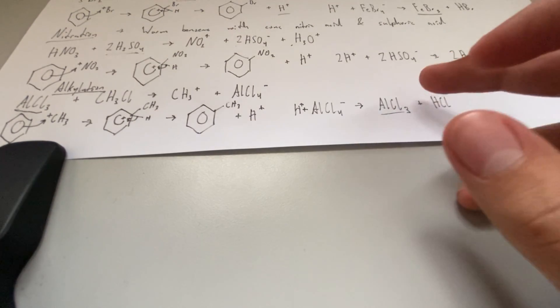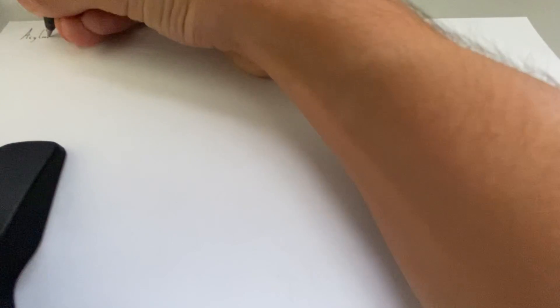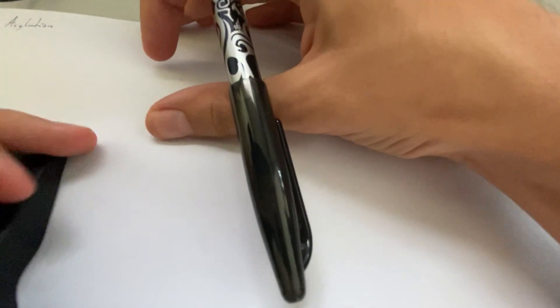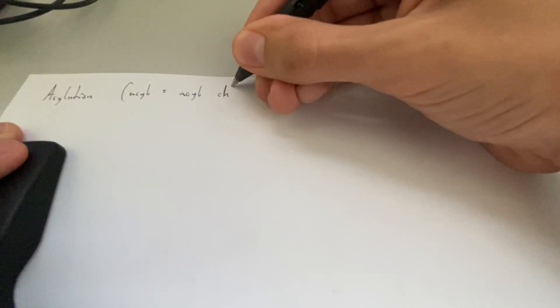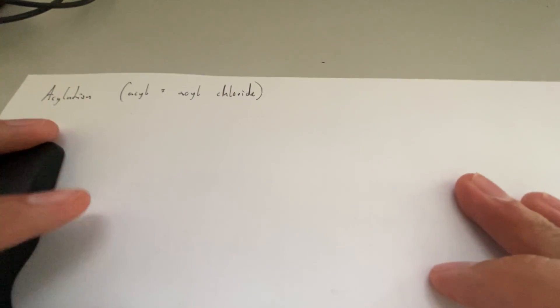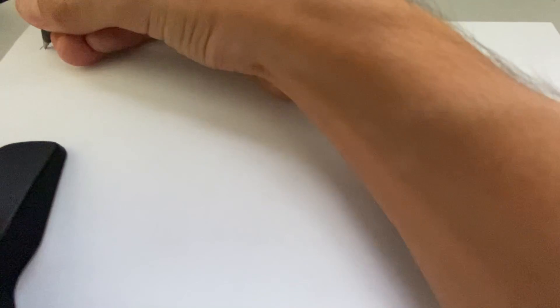We have one more benzene reaction. We're going to do it on the flip side because we are really running out of space. And that's called acylation. I'm going to use acyl chloride in this example. I'm going to use acyl compounds. In this case, it's going to be acyl chloride. That's going to be our reacting species.